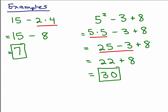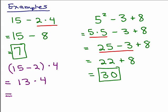Now let's see how this changes if we use some grouping symbols. If the problem had been (15 minus 2) times 4 — with parentheses around the 15 minus 2 — this would be a different problem. Because of the parentheses, we get 13 times 4. An easy way to remember 13 times 4: think of a deck of cards — 13 cards in each suit and 4 suits — so 13 times 4 is 52.